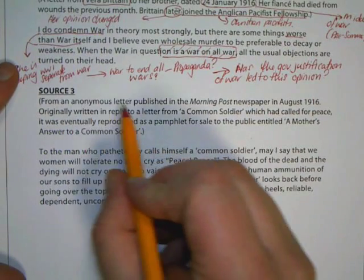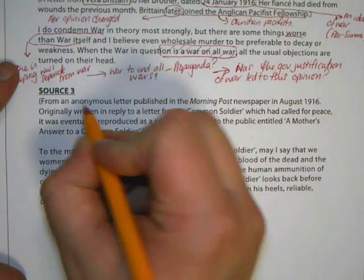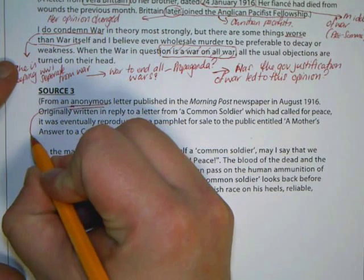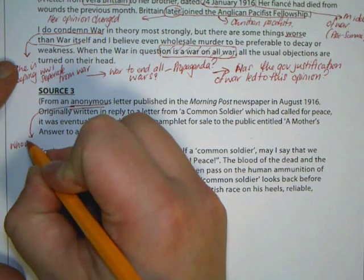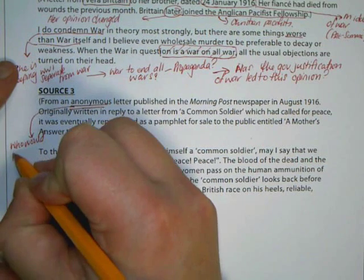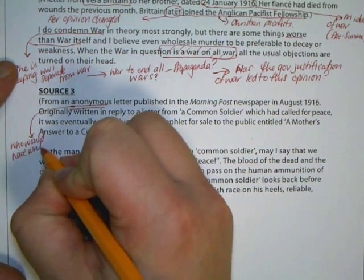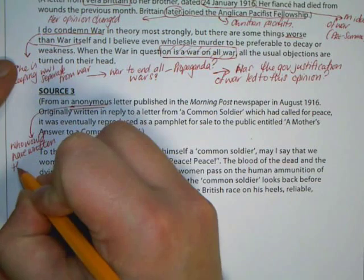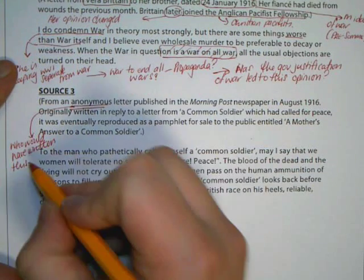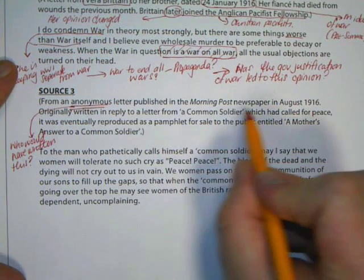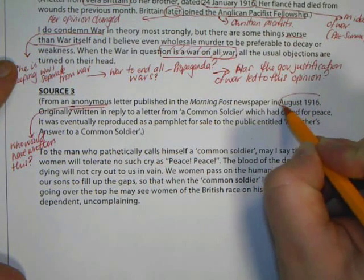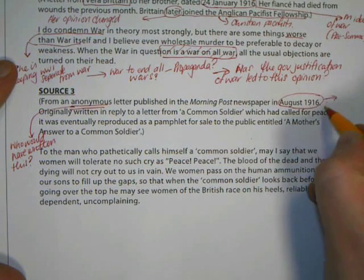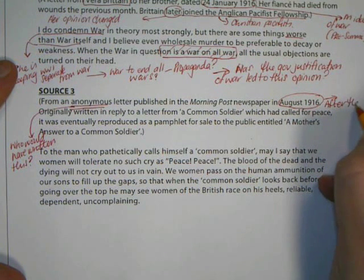Just looking at source three — this is a really interesting one. It says here it's an anonymous letter. This makes it quite difficult to pinpoint who has written it. It's made to look like it was written by a civilian mother. But then the question has to be asked: who would have written this? It says it's a letter from a military mother, but we're going to have a little look into whether that's necessarily the case.